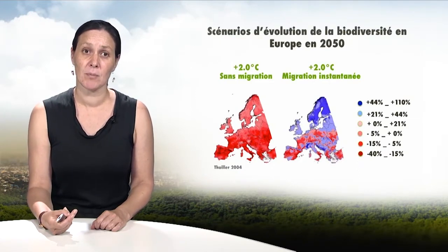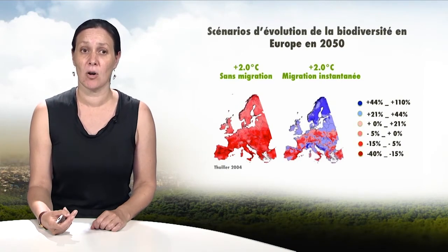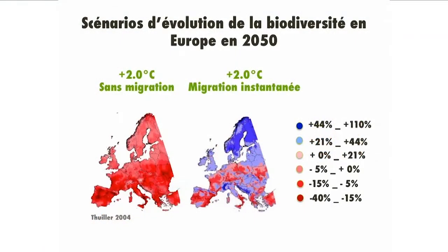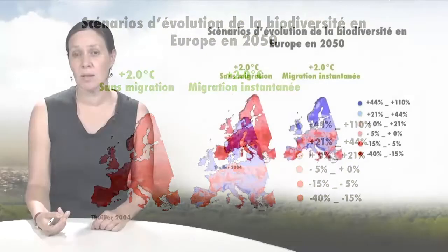Here are two scenarios which describe the evolution of the diversity of species in Europe between now and 2050 compared to the 1990 reference. They are both based on a single scenario of climate change with two different hypotheses. The first scenario supposes that species do not have the ability to migrate quickly enough and will therefore become extinct in unfavourable climate zones. The second supposes that migratory capacity is sufficient for species to instantly colonise all areas that become favourable to them by 2050.